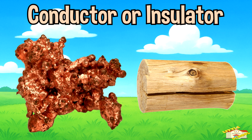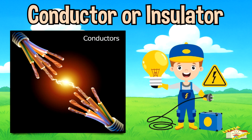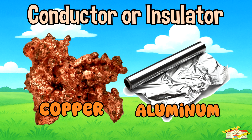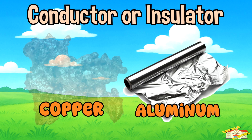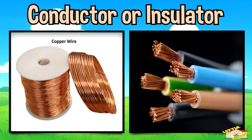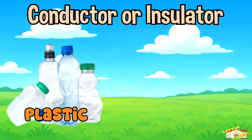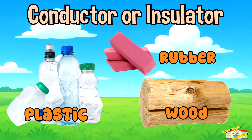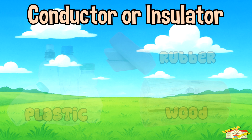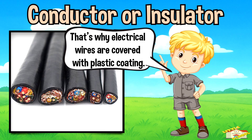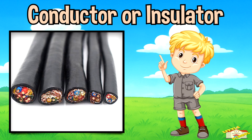Conductor or Insulator. Conductors let heat and electricity pass through easily. Examples are metals like copper and aluminum. That's why wires are made of copper. Insulators stop heat or electricity from passing through. Examples are plastic, rubber, and wood. That's why electrical wires are covered with plastic coating to keep us safe.